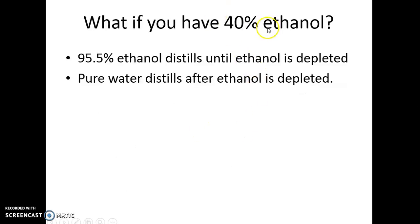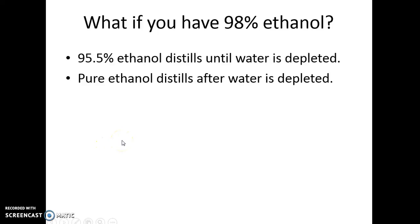If you have 40% ethanol and you go to distill it, 95.5% ethanol distills, and when the ethanol is depleted, then pure water starts distilling. If you have 98% ethanol, 95.5% ethanol distills until the water is depleted, and then you get pure ethanol after that.